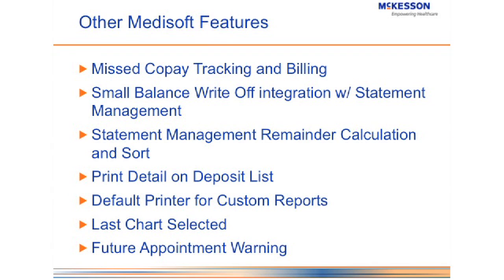In statement management, we added a remainder calculation with a field that tells you the remainder balance on each statement. This allows your office to focus on high-dollar statements first so you're not worried about collecting that $10 statement at the bottom. When you're doing your collection process, you want to focus on where the bulk of your money is. If you have $20,000 on one statement and $5 on another, you'd better be calling the $20,000 statement first.